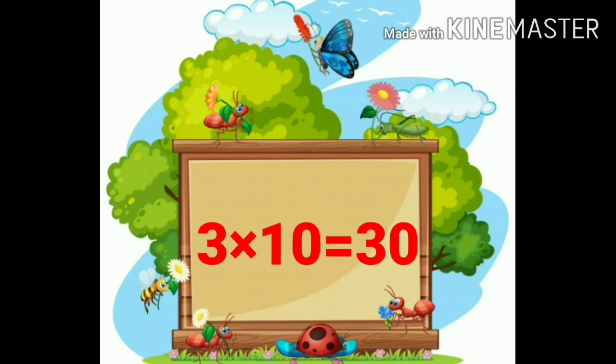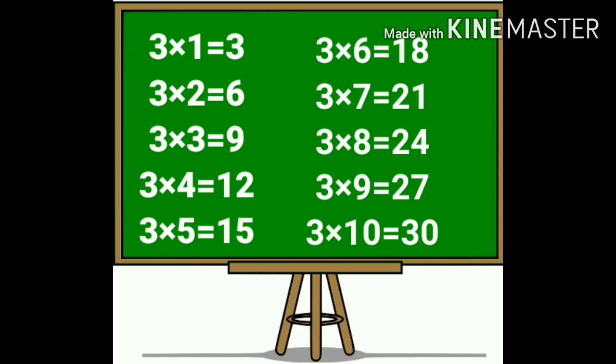Again we learn the multiplication table of 3. Three ones are 3. Three twos are 6. Three threes are 9. Three fours are 12. Three fives are 15. Three sixes are 18.